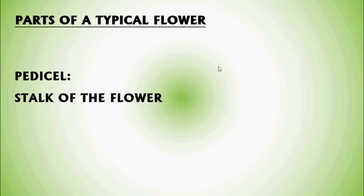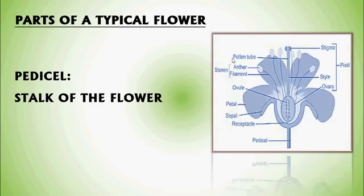Parts of a flower — Pedicel. It is defined as the stalk of the flower and is called a Pedicel. Here in this photograph, see the base of the flower having a long slender, tube-like portion. This is called the stalk of the flower, that is, Pedicel.